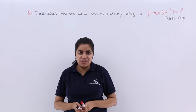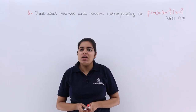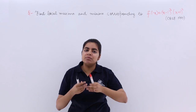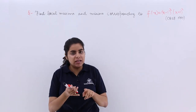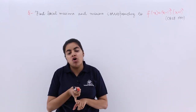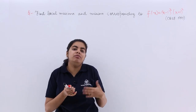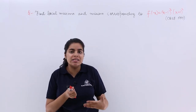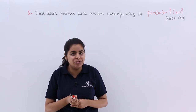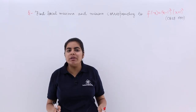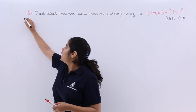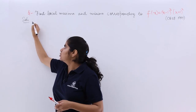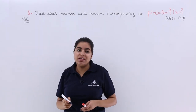This is a previous year question for the CBSE board. When it is plainly written 'find local maxima and minima,' you can either go by the first derivative test or the second derivative test, which we'll see in the next videos. Since we've only studied the first derivative test, let's go with that. Let's start with the solution.